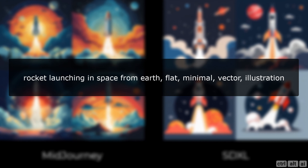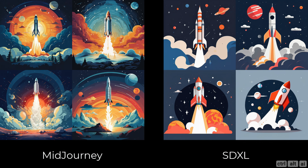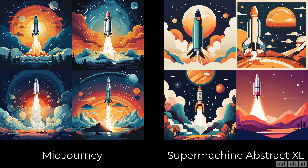Prompt: rocket launching in space from Earth, flat, minimal, vector illustration. I would not say that one image is better than the other — both are as per the prompt, depending on what style you need. However, converting the Stable Diffusion image to a vector format would be much easier than the MidJourney one for further edits.